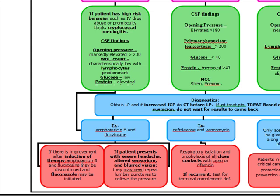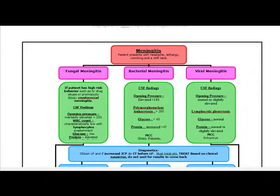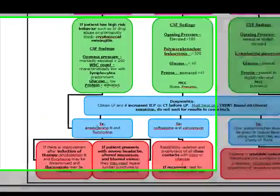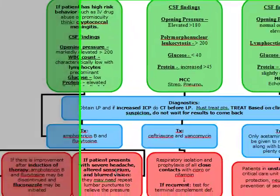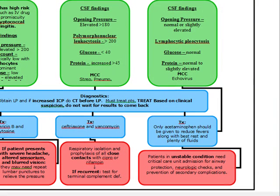In fungal meningitis, if there is improvement after induction therapy with amphotericin B and flucytosine, you can discontinue and start fluconazole. If the patient presents with severe headache, altered sensorium, and blurred vision, they may need repeat lumbar punctures to relieve the pressure.